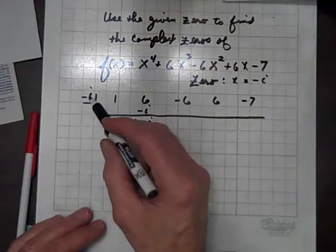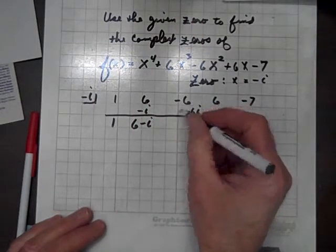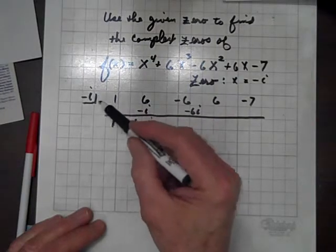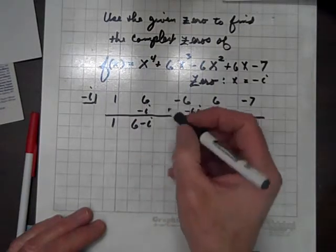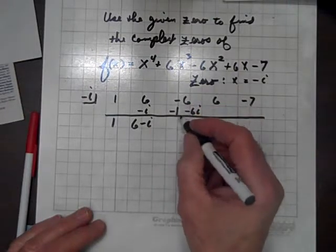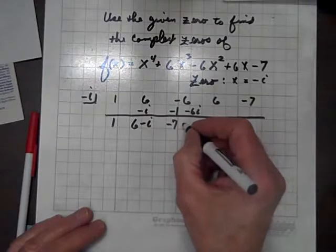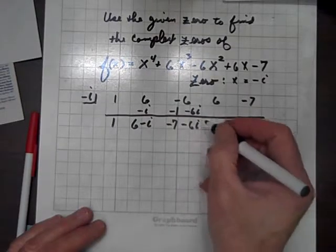Now, negative i times 6 is negative 6i, and negative i times negative i is positive i squared, which is negative 1. Adding, we get negative 7 minus 6i.